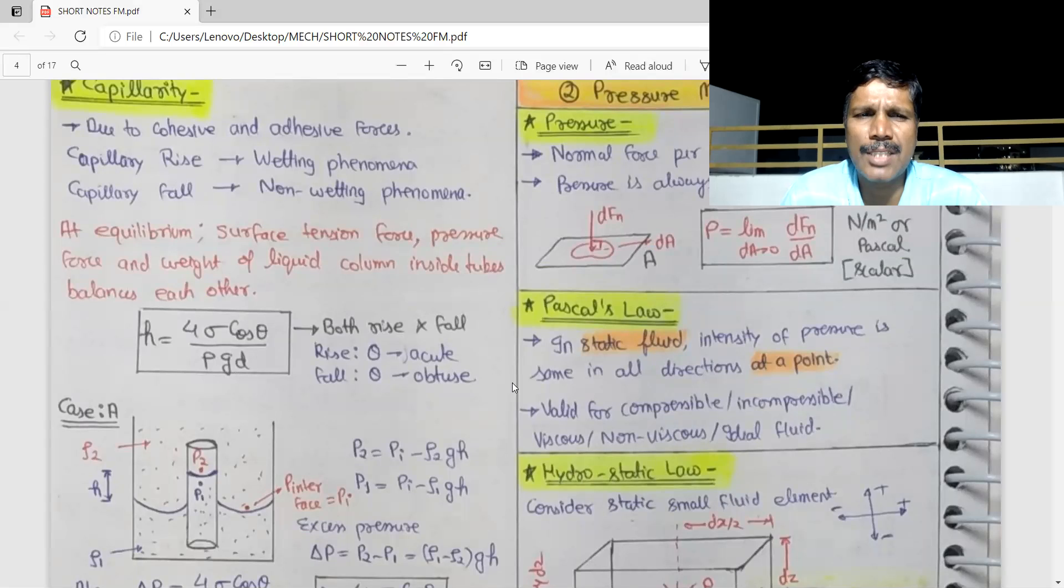So the equation is h equals 4 sigma cos theta by rho g d. Rise is acute theta, fall is obtuse theta. So the formula for rise and fall.